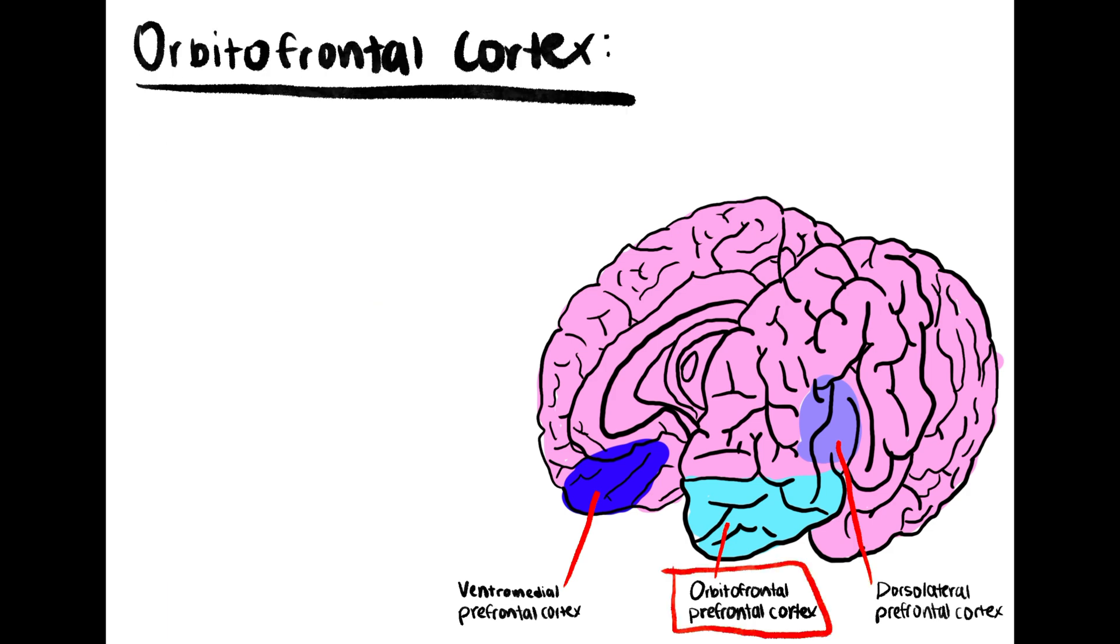Another part of the prefrontal cortex implicated in the social brain is the orbitofrontal cortex. The function of the orbitofrontal cortex is still unclear, however it has been implicated in self-monitoring behavior.